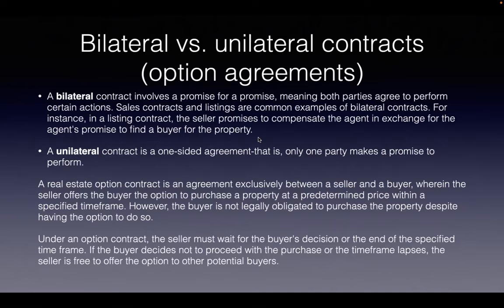A big concept to know is bilateral versus unilateral contracts, specifically around options. In a bilateral contract, both parties have a promise — they both agree to perform certain actions. Sales contracts are common examples: the seller will sell the home if the buyer brings money. Or in a listing contract, the seller promises to compensate the agent if the agent procures a buyer — that's a bilateral contract, promise for promise.